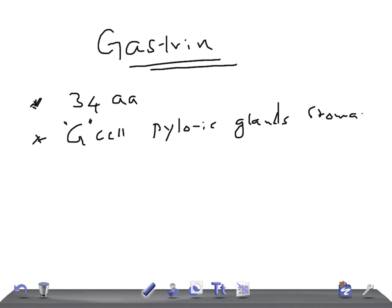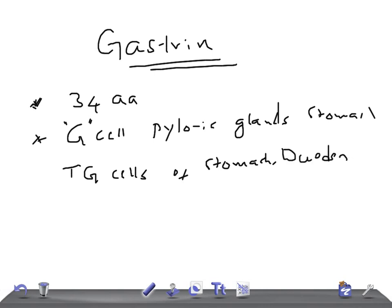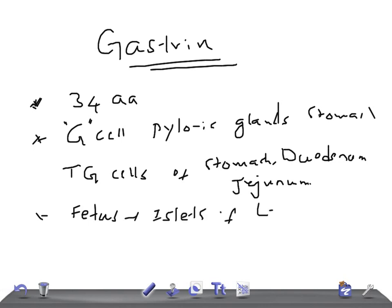Not only the G-cells of the pyloric glands — gastrin is also secreted by the TG-cells of the stomach, duodenum, and jejunum. And in the fetus, it is secreted by the islets of Langerhans.